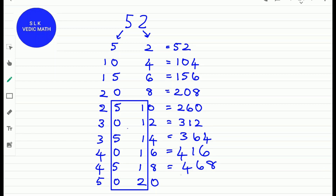For 52 times 10, we add 0 plus 2 which is 2 and write down the 5 as it is. So 52 times 10 is 520.